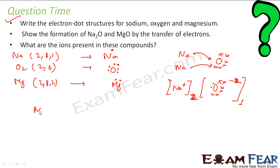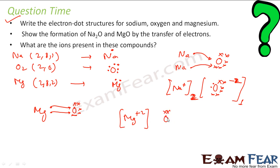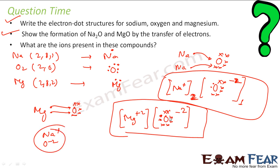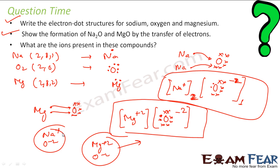Similarly, for MgO: magnesium has 2 extra electrons and oxygen needs 2. So 2 electrons go from Mg to O. Mg gets 2 positive charge and oxygen gets 2 negative charge, with 1 oxygen atom. This gives MgO. The ions present: in Na2O, we have Na plus ion and O2 minus ion; in MgO, we have Mg2 plus ion and O2 minus ion.